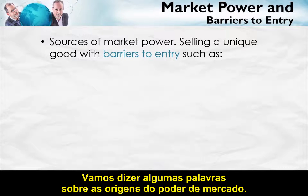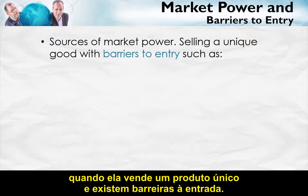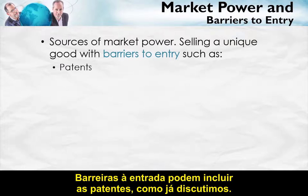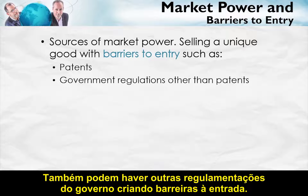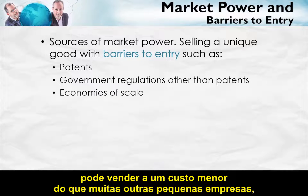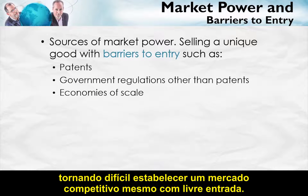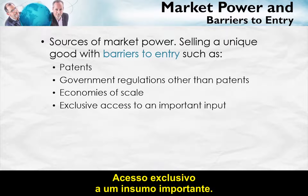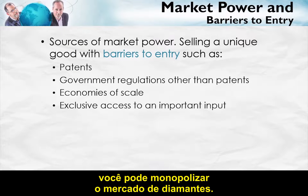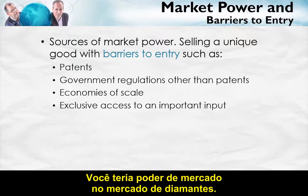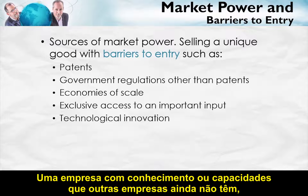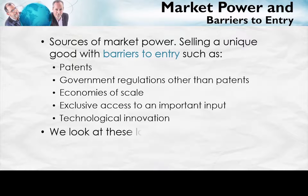A firm has market power when it's selling a unique good and there are barriers to entry — forces which prevent competitors from entering the market. Barriers to entry could include patents, as we've already discussed, as well as other government regulations such as exclusive licenses. Economies of scale can mean that a single big firm can sell at lower cost than many small firms, making it difficult to establish a competitive market even with free entry. Exclusive access to an important input is another source — diamonds, for example, are found in only a few places; controlling those mines gives market power. Technological innovations can also give a firm temporary market power.